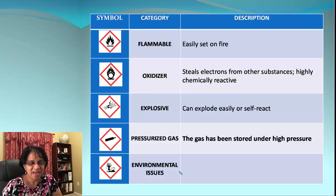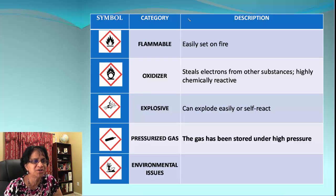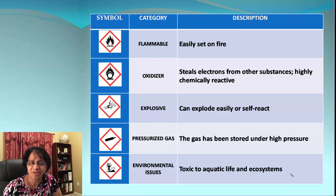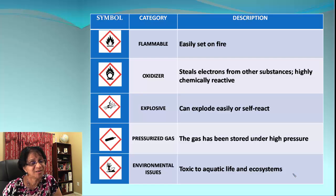Next is environmental hazard. Look at the symbol — it shows a tree and a fish. A chemical substance could be toxic to aquatic life or dangerous to any ecosystem. We have to be careful about how to dispose of such chemicals.